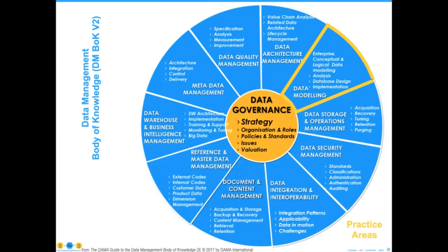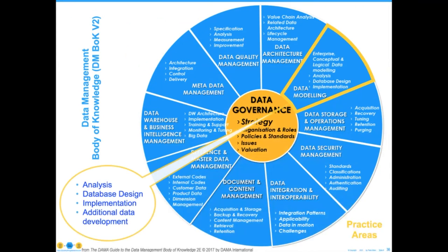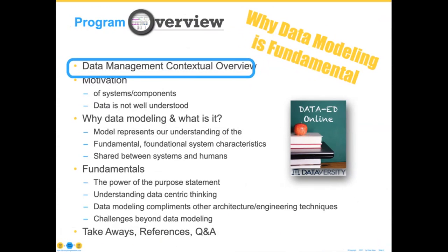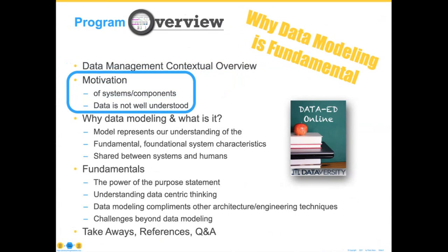If this is the first time you are seeing this wheel, shame on you — but actually, shame on us for not making it more accessible. This is the DAMA DMBOK wheel. You can see that data modeling is one of the 11 pie wedges. These things are mainly put out there for your reference. This is the context model from the very first version of this.